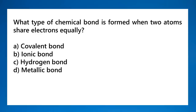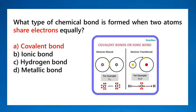What type of chemical bond is formed when two atoms share electrons equally? That is a covalent bond. Remember: when electrons are shared, that's covalent; when electrons are transferred, that's ionic.